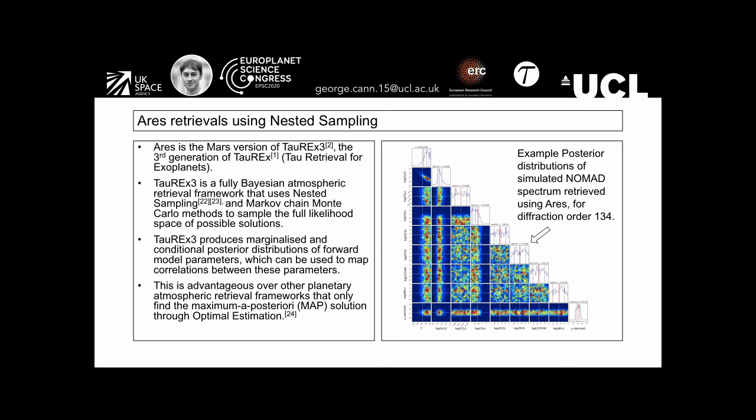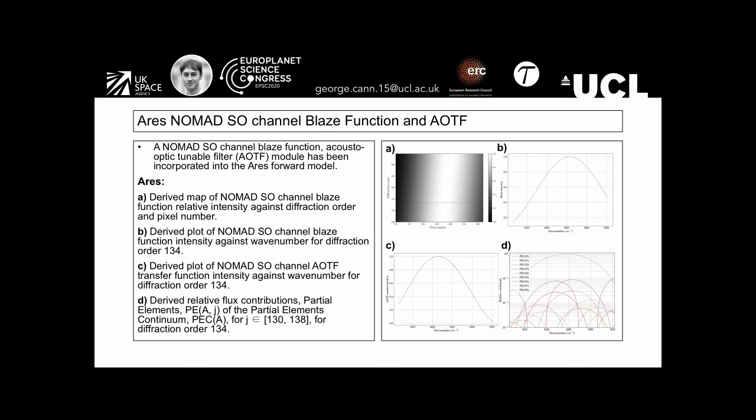The example to the right shows an example posterior distribution of NOMAD simulated spectra retrieved using ARIES for diffraction order 134, which is typically used for the retrieval of methane.